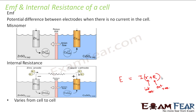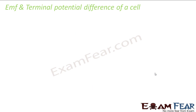This internal resistance varies from cell to cell — it is not constant for all cells. Depending on each cell it will have a different value. It is negligible when the EMF is very much greater than IR. That means if the EMF is very, very greater than IR, we can neglect the internal resistance. If the EMF of the cell is very high, we can neglect the internal resistance.